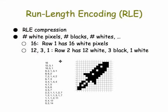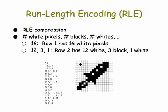The way this works is in each row of this 16 by 16 matrix we're going to first say how many white bits there are, and then whenever we change to black bits we'll list the number of black bits. So in row 1 there's 16 white bits, in row 2 there's 12 white bits, then we change to 3 black bits and then back to 1 white bit. In row 3 we start with 10 white bits, 5 black bits, 1 white bit, and so forth.